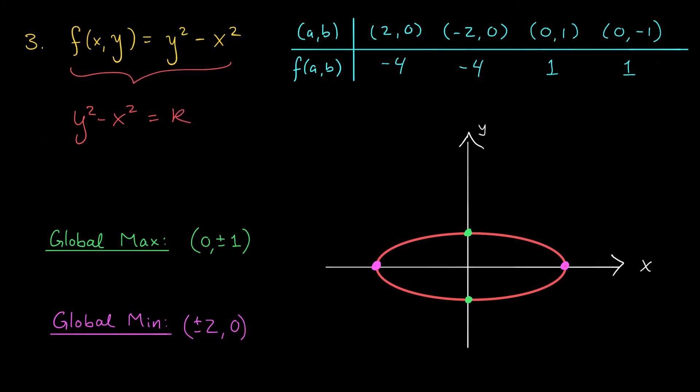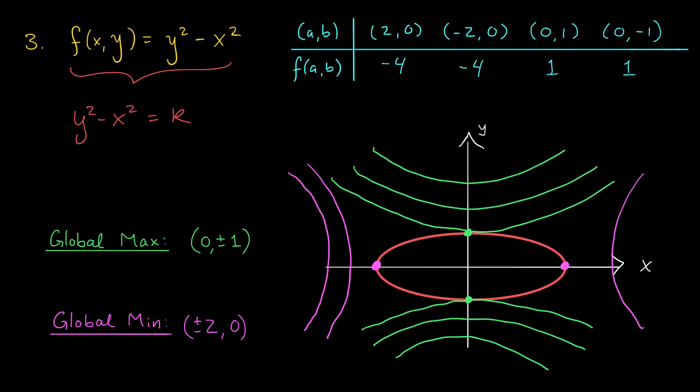When k is positive, these hyperbolas open in the y direction. You can see that as we decrease the value of k, our hyperbolas are getting closer and closer to the origin until they're just tangent to the constraint curve at the points 0, 1 and 0, minus 1. These are the locations of our global maxima. Likewise, if k is negative, then our hyperbolas are opening in the x direction. As we slowly increase the value of k, our hyperbolas are moving toward the origin until they become just tangent to the constraint curve here at the points plus or minus 2, 0. These are the locations of our global minima.